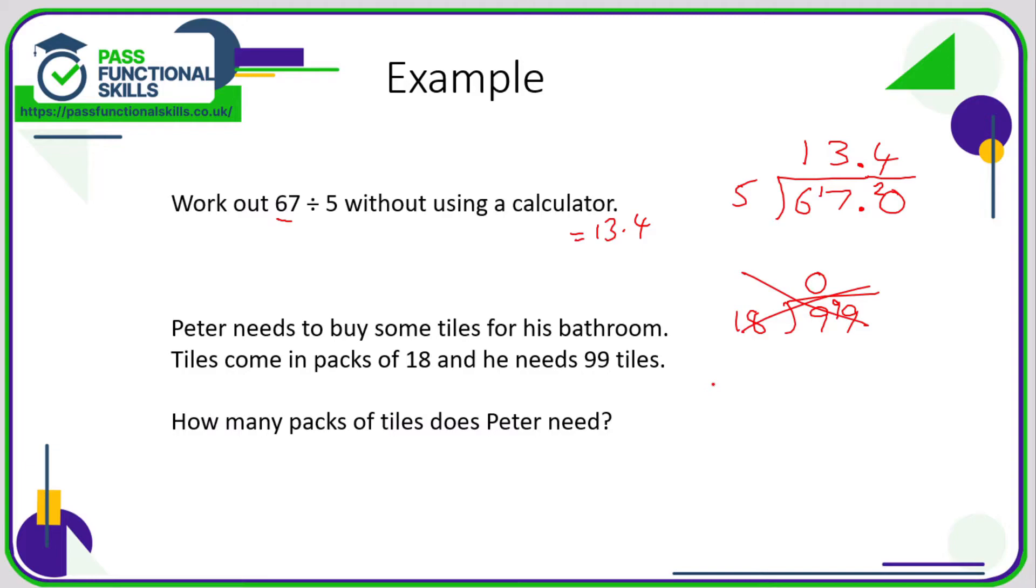What I would do is simply work out my 18 times table. Let's just think of this logically. One pack, 18 tiles. Two packs is going to be twice as many tiles. Two 18s or 18 plus 18 is 36. Three packs would be 54.